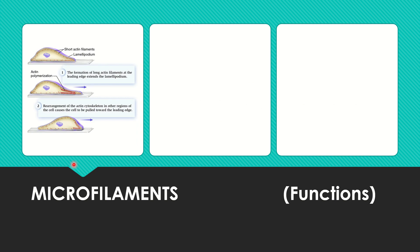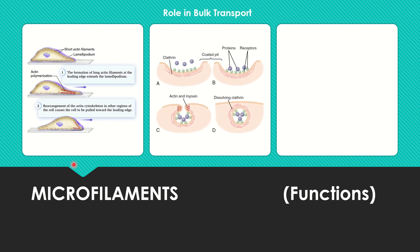The functions of microfilaments include: a role in amoeboid transport, where actin is arranged in the pseudopodium and the cell moves; and a role in bulk transport — that is, endocytosis and exocytosis — which occurs through the approach of molecules to the cell surface.